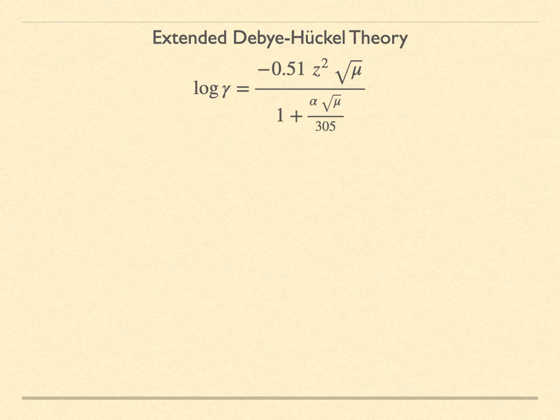The variables are z, which is again the charge of the ion, and mu is the ionic strength of the solution, like we just calculated.